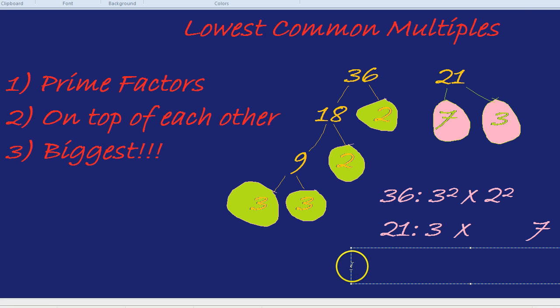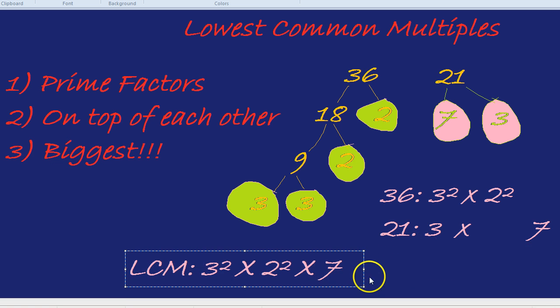For the lowest common multiple, we're not going to take the smallest like we did for the highest common factor, we're going to take the biggest. What's bigger, 3 or 3 squared? Indeed, 3 squared. What's bigger, 2 squared or nothing? 2 squared. What's bigger, nothing or 7? 7. There we have it, there's our lowest common multiple.